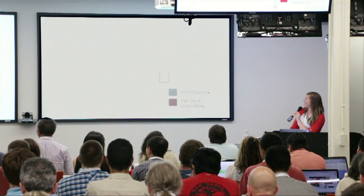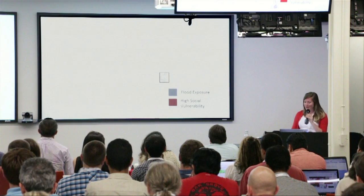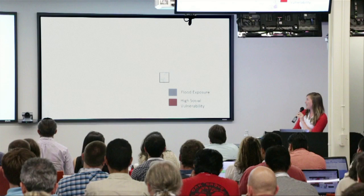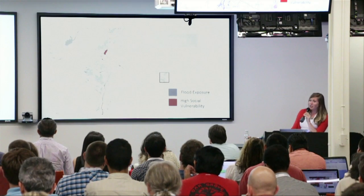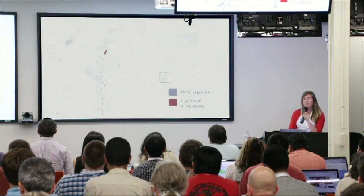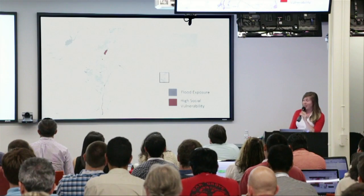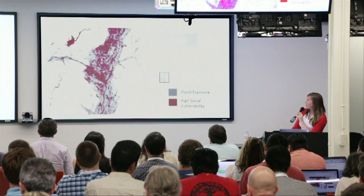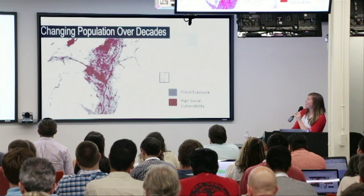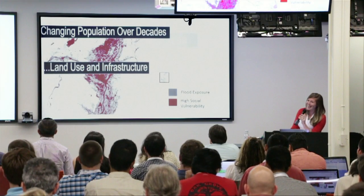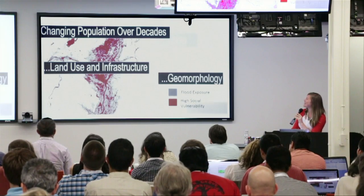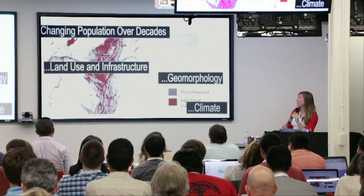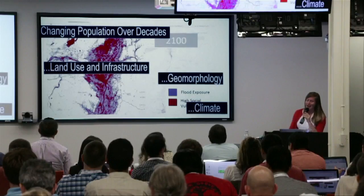What we're ideally going for is to create a dynamic map where you can zoom in anywhere in the world and look at flood exposure and social vulnerability, and see how that might change over time as climate, population, or land use changes, and run statistics on that. This is dummy data — this isn't real flood risk — but this is ideally what we're trying to produce to communicate how our changing world influences flood vulnerability in new ways.